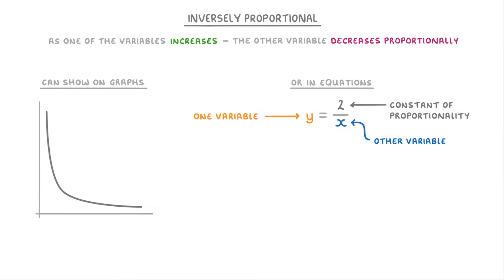And one last thing to point out is that it doesn't matter if there are other numbers next to our variables, like this 3 or this 5. As long as one variable is equal to something over the other variable, then it counts as inversely proportional.